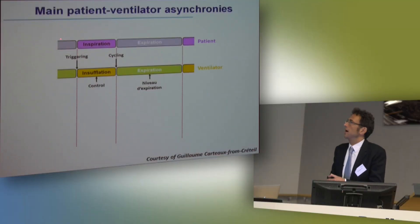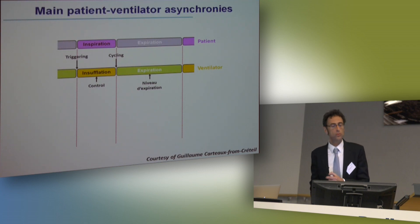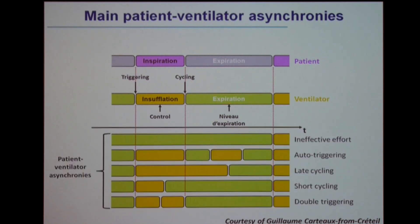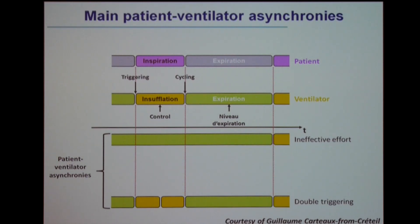Coming back to our asynchrony: here is the breathing of the patient — inspiration followed by expiration — and here is what we expect from the ventilator: an insufflation synchronous with the inspiration, and expiration synchronous with the patient's expiration. There are many possible types of asynchrony, but I will focus on two major ones: ineffective efforts and double triggering.